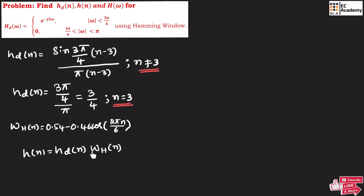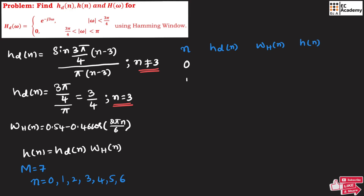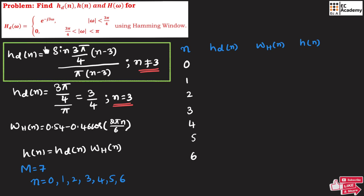Using these formulas, let us find the unit sample response h(n). Since M = 7, n takes 7 values from 0 up to 6: n = 0, 1, 2, 3, 4, 5, 6. For each value of n, we will find hd(n), w_h(n), and h(n).